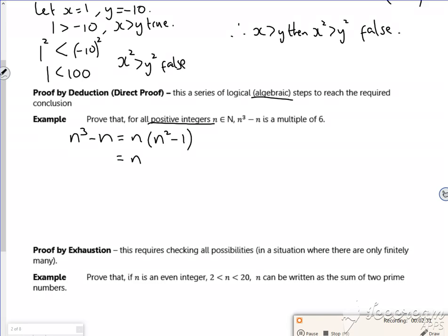So n squared minus 1 is a difference of two squares. You might not spot it there, but that's n minus 1 times n times n plus 1. If n was 5, I'd have 4 times 5 times 6.